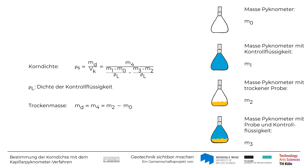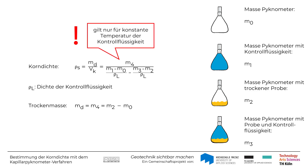Die Dichte Rho-L kann einer Tabelle in der Norm entnommen oder mithilfe einer dort angegebenen Formel ermittelt werden. Die gezeigte Formel für die Korndichte Rho-S gilt allerdings nur für den Fall, dass die Kontrollflüssigkeit bei allen Messungen die gleiche Temperatur und damit die gleiche Dichte Rho-L hatte. Bei abweichenden Temperaturen kann auf eine ähnliche Formel in der Norm zurückgegriffen werden.